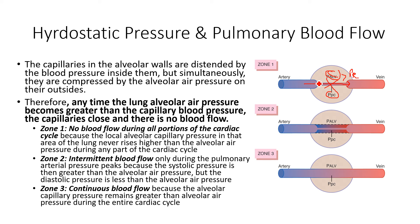Zone two perfusion is intermittent blood flow — there is perfusion but only during systole. In this situation, the pulmonary capillary pressure during systole is able to overcome the alveolar air pressure, and blood makes it through the capillary, exchanges gases, and moves down to the pulmonary veins going back to the left ventricle. We see this typically in the upper segments of the lung.